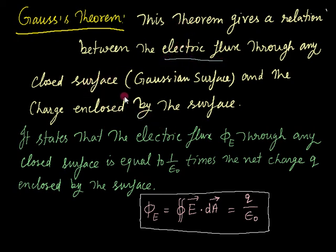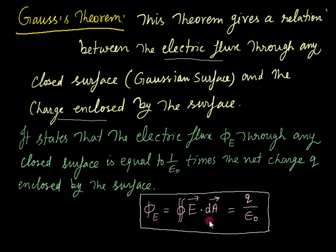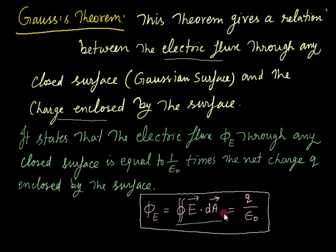The Gauss theorem states that the electric flux phi_E through any closed surface is equal to one over epsilon-naught times the net charge enclosed by that closed surface. Here phi_E is denoted by the closed surface integral of E dot dA, or sometimes written as dS. This equals Q over epsilon-naught, where Q is the charge enclosed by the closed surface.